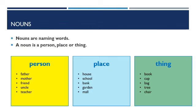Now come to the next page, page number 35. Here our topic is Nouns. Dear students, nouns are naming words. A noun is a person, place, or thing. Names of any person, place, or thing are called nouns. For person, you can say father, mother, friend, uncle, or teacher — anybody.